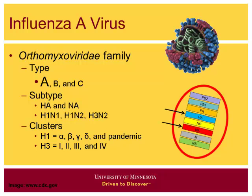Influenza viruses are subtyped based on HA and NA. In pigs, the most common subtypes are H1N1, H1N2, and H3N2. We can further classify these viruses by differing clusters, including our H1 nomenclature — alpha, beta, gamma, delta — and so on for H3s. Just a brief overview slide here on influenza virus.